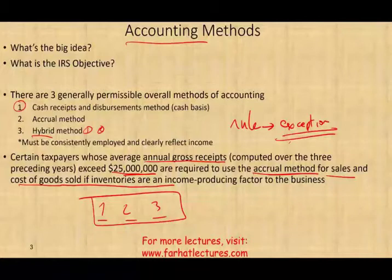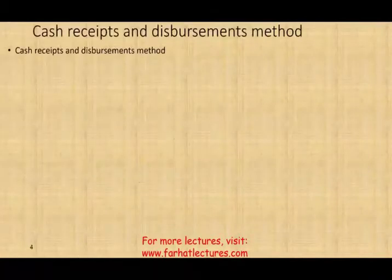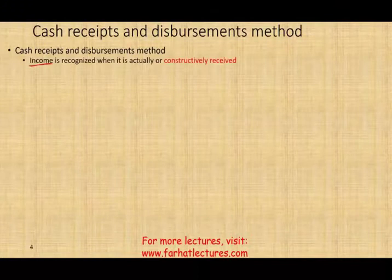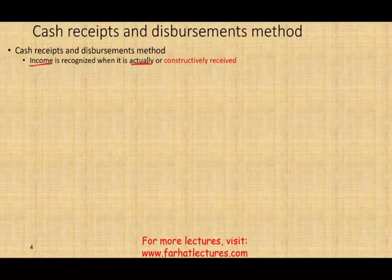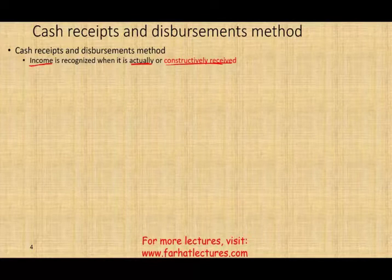Let's cover each method separately, starting with cash receipts and cash disbursements. Under this method, income is recognized when you actually receive it or constructively receive it. 'Actually' means you have the money; 'constructively' means you have access to it — for example, a check sitting in your mailbox, or dividend revenue received by your brokerage account on your behalf. You have access to it, so it's taxable.